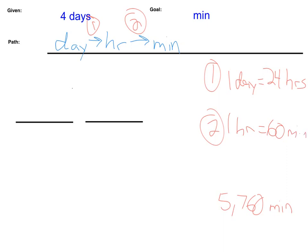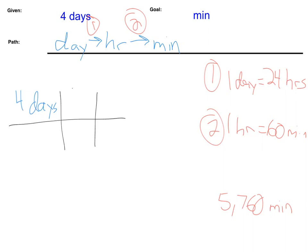Now if we go through and solve this problem, we start off by writing down what we're given or what we want to convert, which in this case is going to be four days. Then we start building our railroad tracks. We have one, two conversions, so therefore we need to build one, two sets of tracks. I need to convert from days into minutes, so I need days to cancel out — one day on bottom per 24 hours.